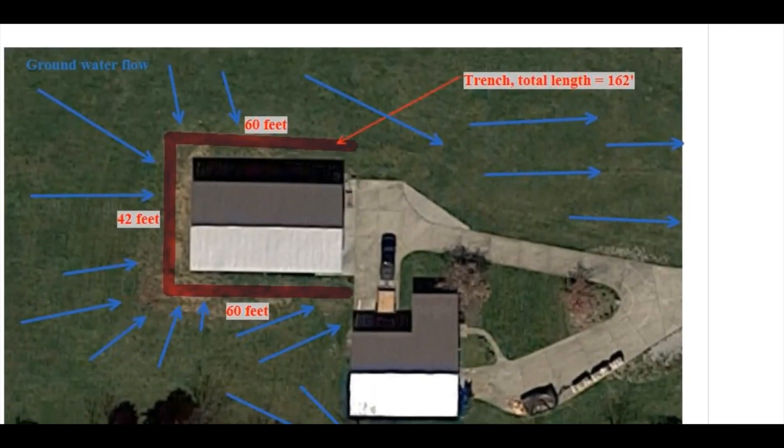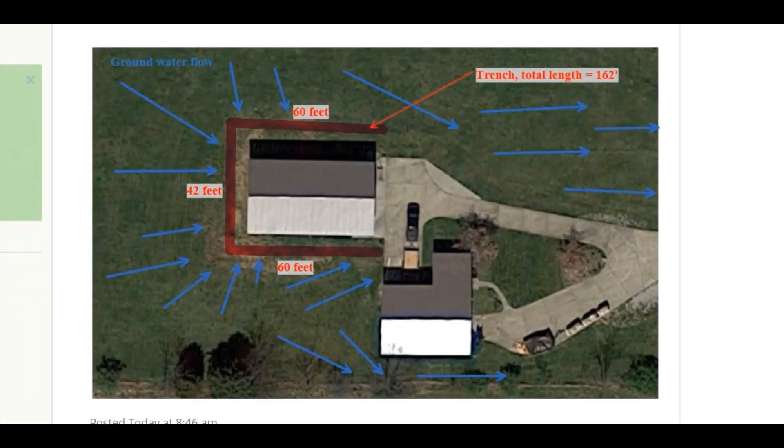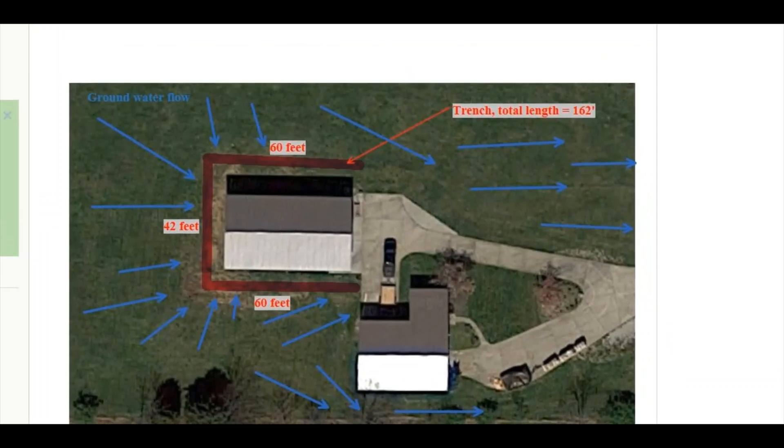Here's that overhead view of the project. These blue lines show the direction the water flows. It's hard to tell from this overhead view, but there's like a little bowl that this shop was built into. The water just comes rolling down the hill here and pools up around the barn. You can kind of see where the grass is dead—that's where the water sits.